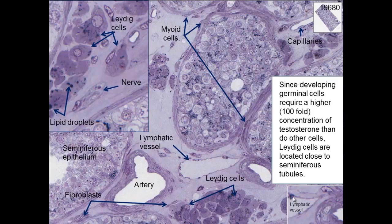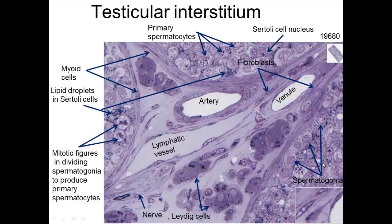Since developing germ cells require 100-fold concentration of testosterone than others, that's why you have its close proximity. I think we said that one time before, but we want to confirm that.